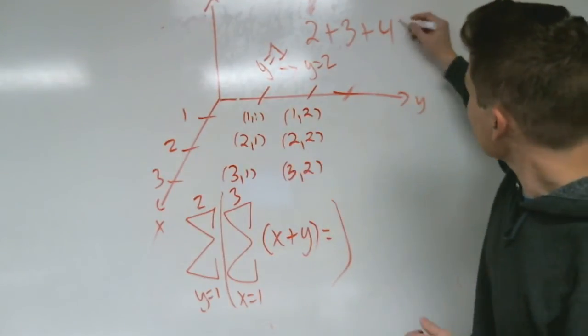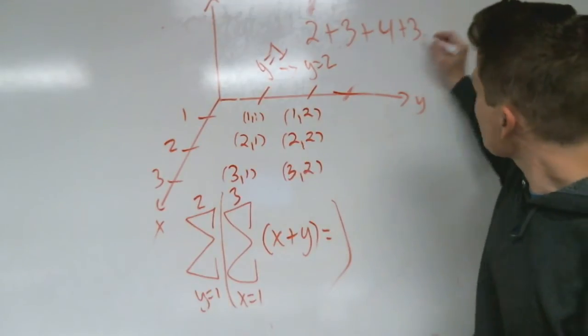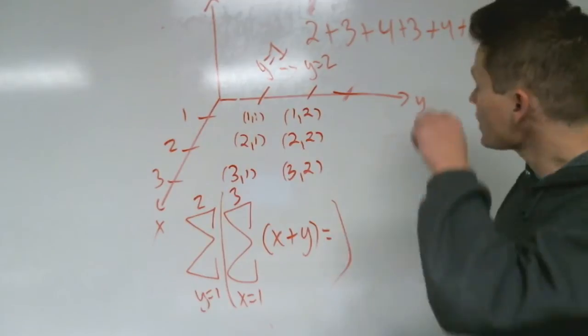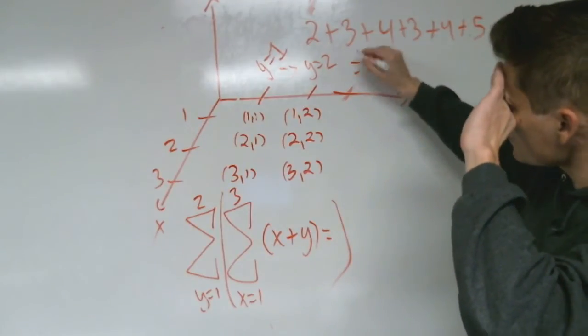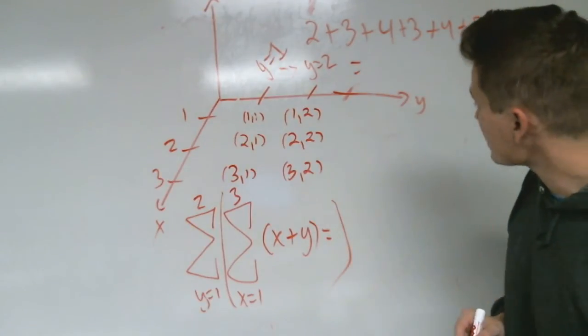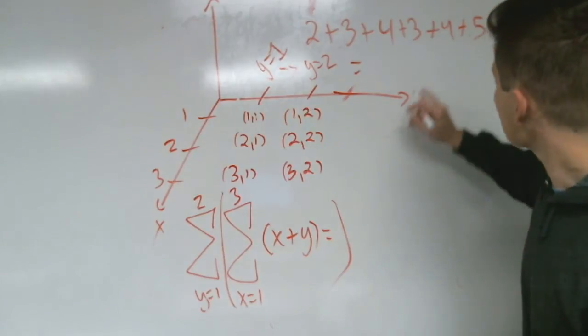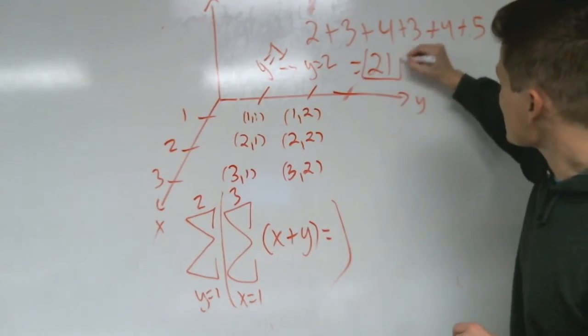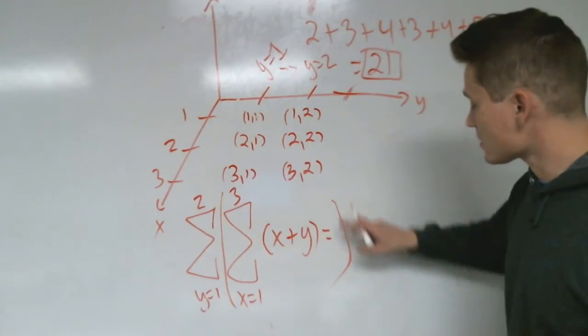So 1 and 2 is 3, 2 and 2 is 4, and then 3 and 2 is 5. There you go. So let's add these up here. So 2 and 3 is 5, then 4 is 9. 9 and 3 is 12 and 4 is 16 and 5 is 21. So the value of this double sum here is 21.